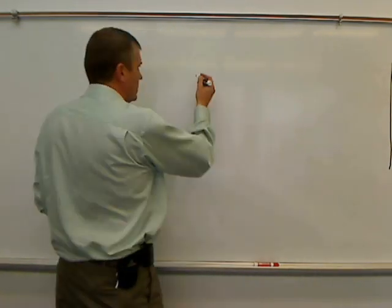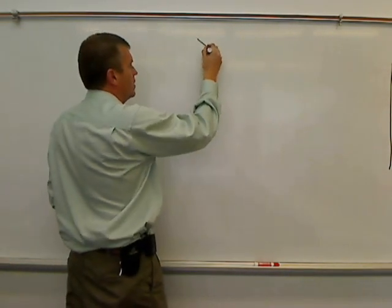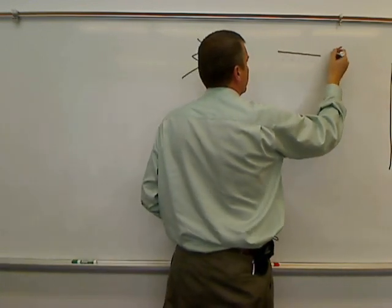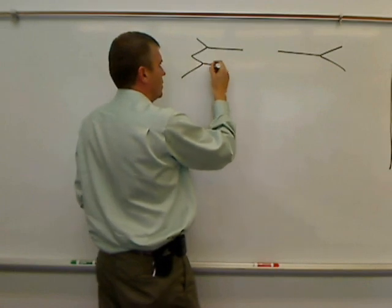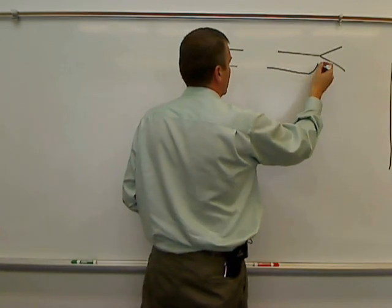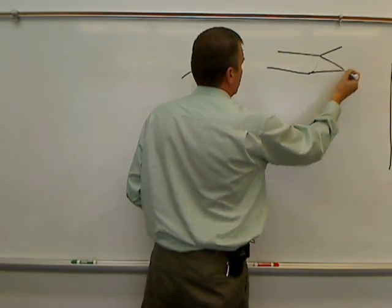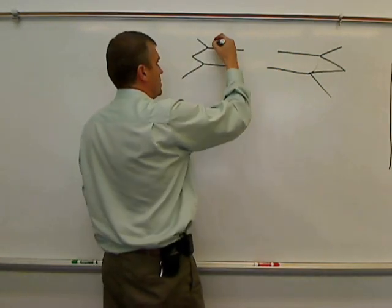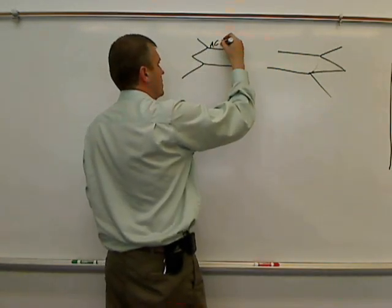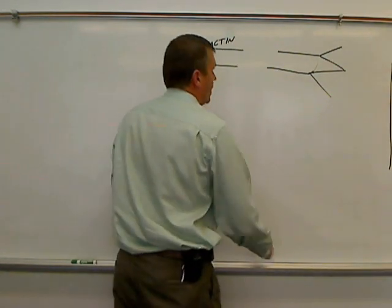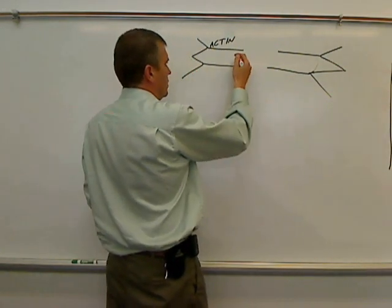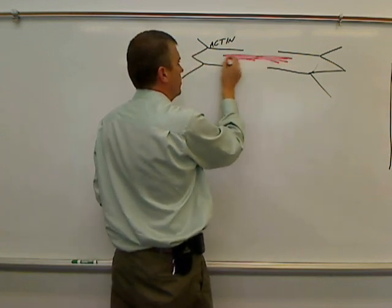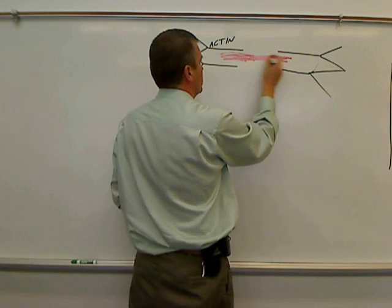Okay, first let's remember where we are, we're in a sarcomere, and again these are the little black filaments, or the actin filaments, and let me draw a red myosin filament.